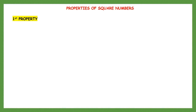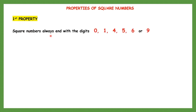Now there are some properties of square numbers that we need to learn. The first property says square numbers always end with the digits 0, 1, 4, 5, 6, or 9. All square numbers will have only these digits in the units place. So learn that up by heart.